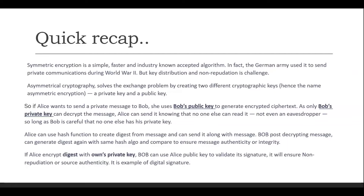The asymmetric key solves the key distribution problem by creating two different key sets: a public key and a private key, as we have seen in the last lecture. As a recap, if Alice wants to send a message privately to Bob, she can use Bob's public key. The sender's key plays no role in encryption — she can encrypt the cipher text using the receiver's public key, and only Bob can decrypt it with his private key. Alice can send it over an insecure channel because no one else can read it unless Bob's private key is compromised.